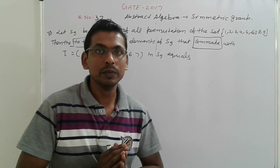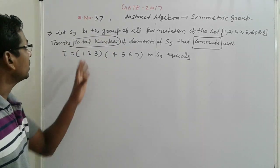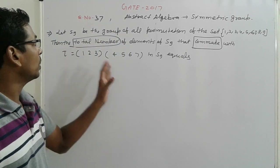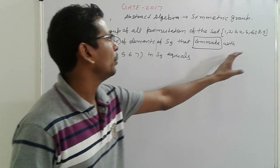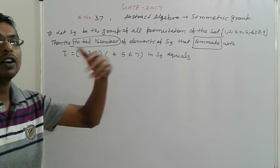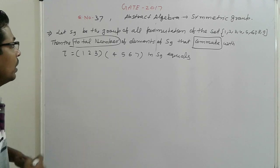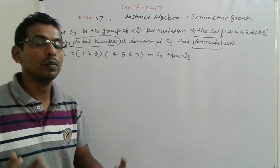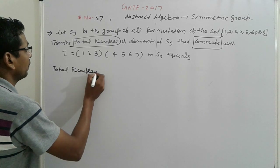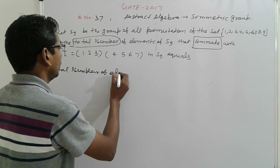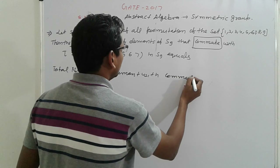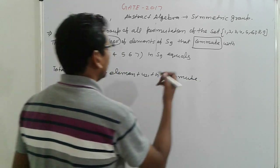Very easy and conceptual based problems. Let S9 be the group of all permutations of a set. The total number of elements in S9 that commute with a given element is to be found. The number of cycles of third order and fourth order are given, and no others.